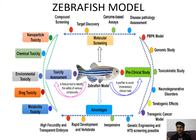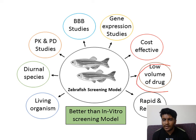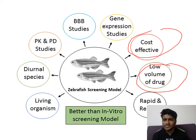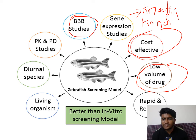Zebrafish is a widely used model nowadays for toxicological and pharmacological data, molecular screening, genome-based assays, neurological disease, teratogenic effects, and cancer research. Zebrafish is used because it requires the least amount of drug, is cost-effective, allows gene expression studies, knock-in and knock-out studies (for obesity, hemophilia, etc.), blood-brain barrier permeability studies, PKPD, and has a diurnal 12-hour light/12-hour dark cycle. It is better than any other in vitro screening model.